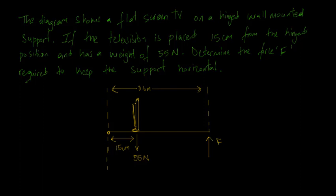The question shows a flat screen TV on a hinge wall mounted support. The television is placed 15 centimeters from the hinge position and has a weight of 55 Newtons. We need to determine the force F required to keep the support horizontal. The television is mounted on the support at a point — let's call that point P — and the support has a length of 0.6 meters.